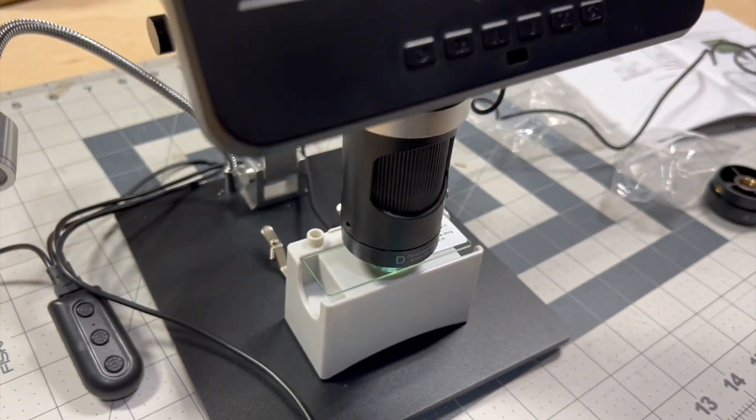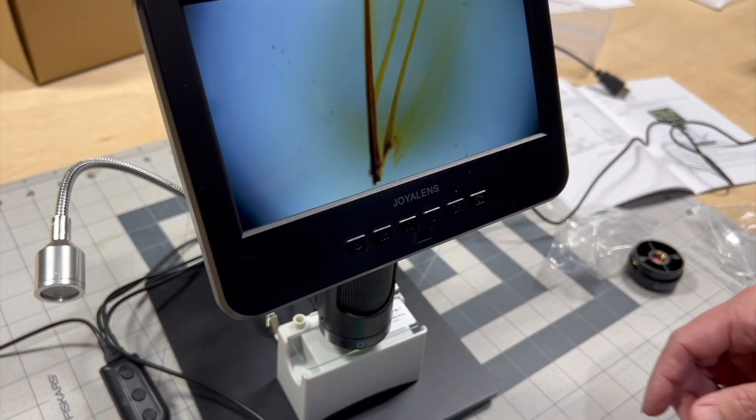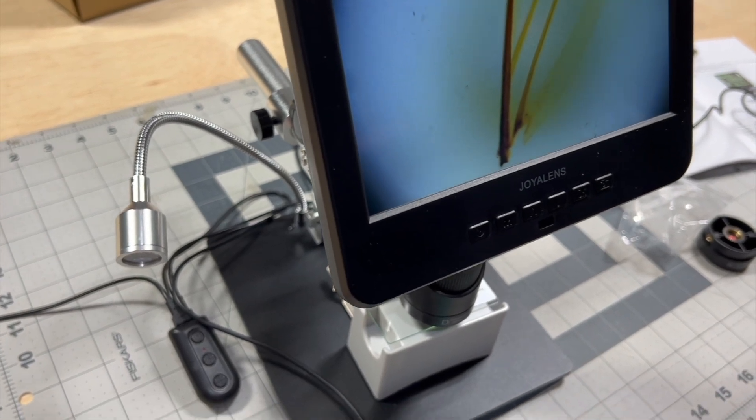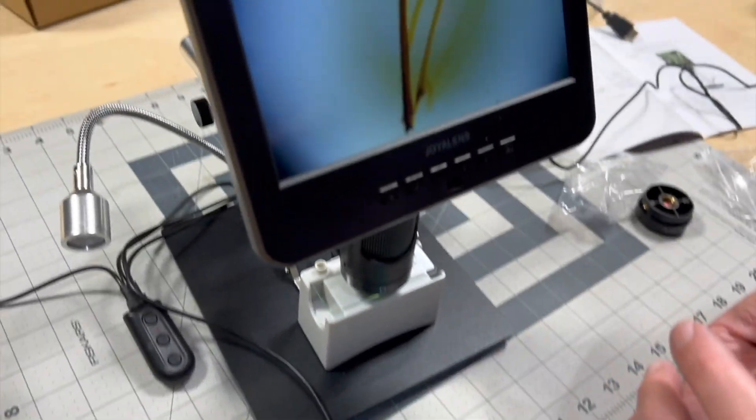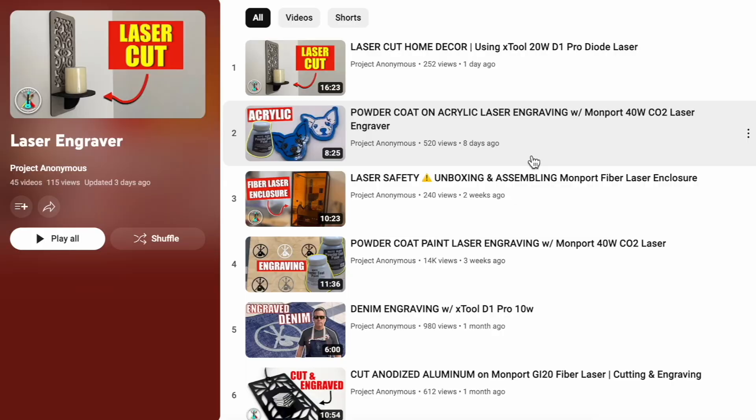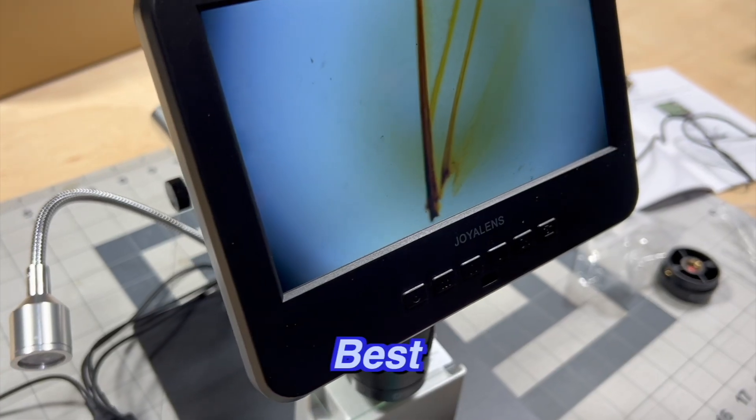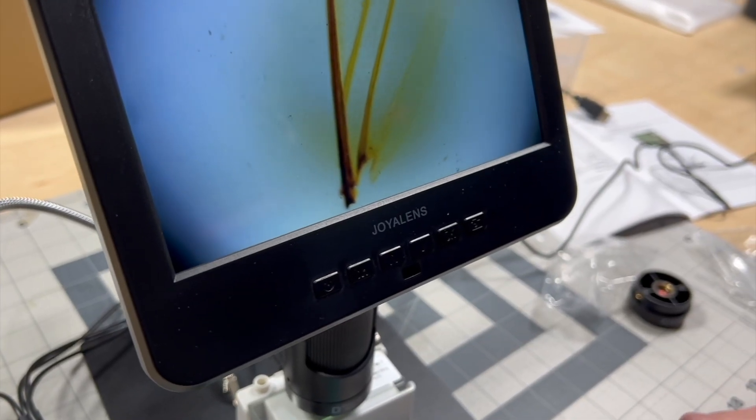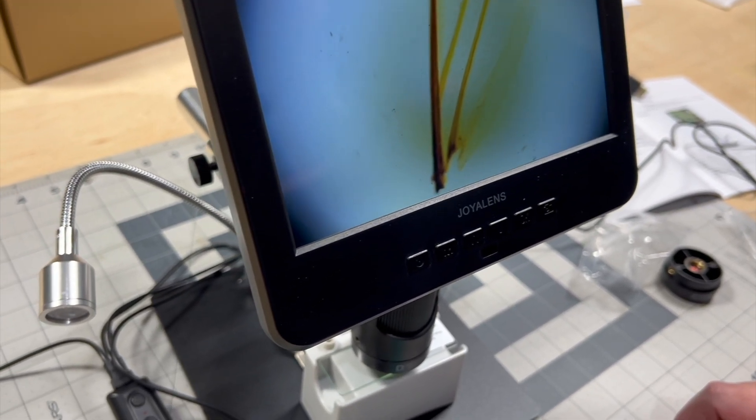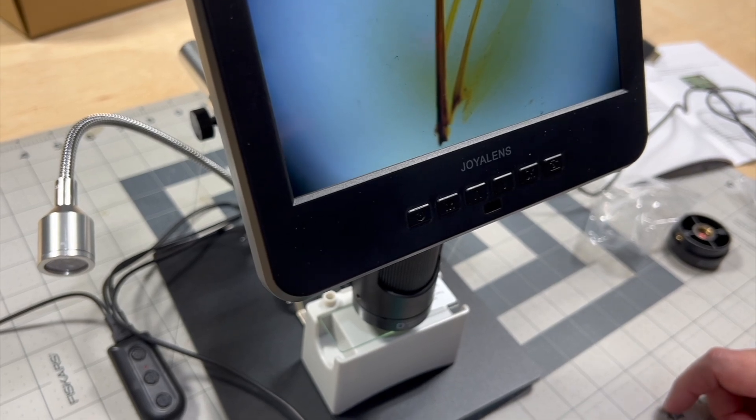All right, so honestly this is pretty cool that we can look at this stuff. We have all these samples too, but what we really want to use this microscope for is to closely look at our lasering projects to see if we're getting the best results that we can. Let's put our other lens back on and look at some engravings that we've done and kind of look at what they look like up close because that'll be pretty neat.